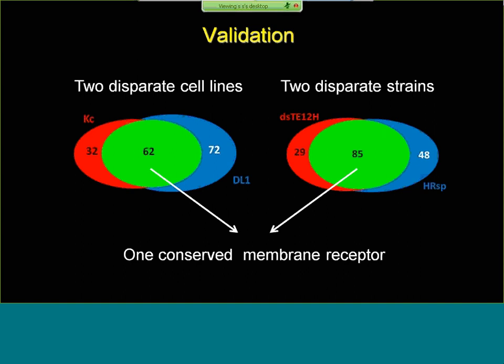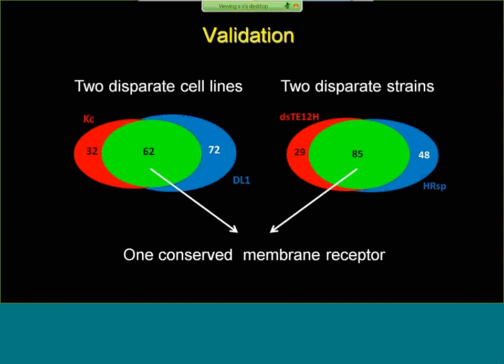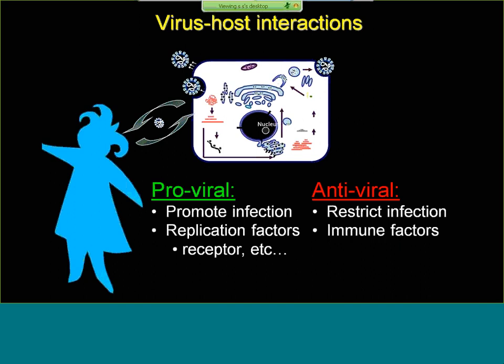For validation, we took the set of genes identified in the primary screen and tested them against two different Drosophila cell lines: the original DL1 cell line and another called KC. A significant number of genes came out of both. We then took 62 genes to look more carefully, also using two different strains of Sindbis virus, again finding a large overlap. One thing we were particularly interested in was whether we had identified the cell surface receptor for this virus — no cellular receptors are known for any alphavirus, which precludes their use as therapeutic targets.